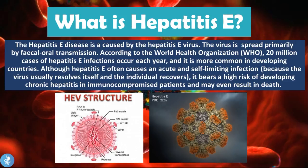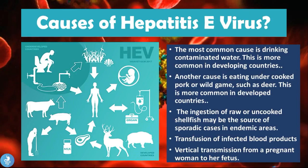The most common cause of hepatitis E is drinking contaminated water, which is more common in developing countries. A sewage system can infect water sources that reach plants, animals, and other human beings. When a person has hepatitis E, their stool contains many viral particles that can stay alive in water and soil, and when they come into contact with a host such as an animal or human, they are able to thrive again — this is how the hepatitis E virus survives, replicates, and infects many people.